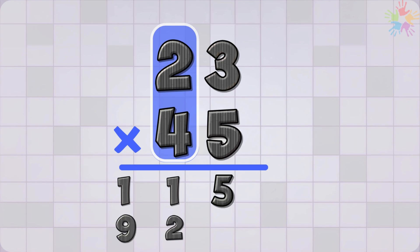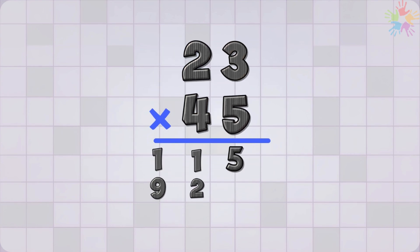After all that, our second row gives us 92. Now let's add them up. But before we do, there's one thing I want to point out.